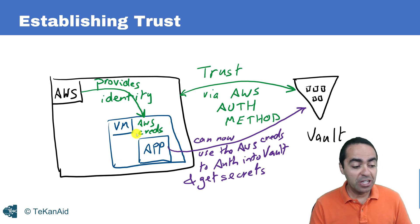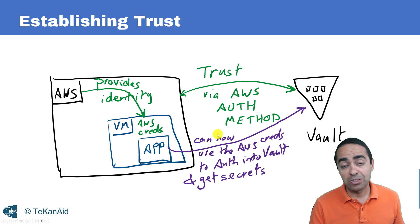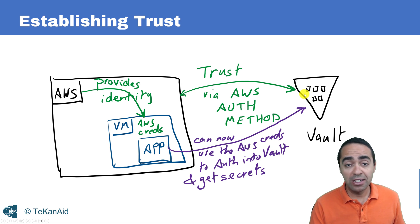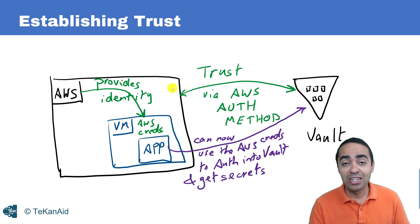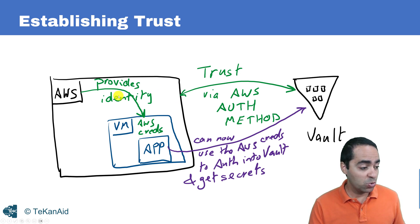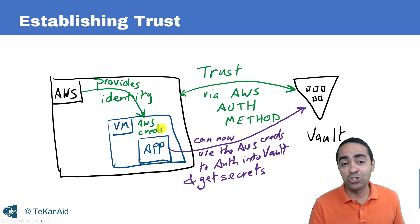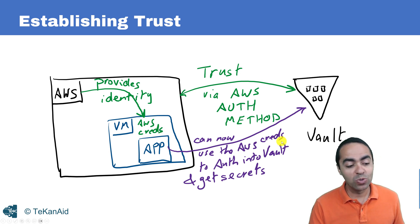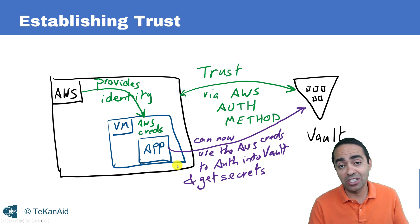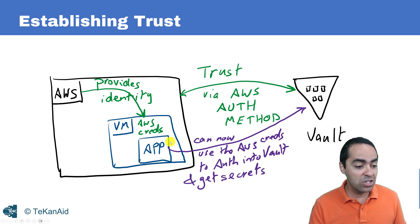The EC2 instance has credentials and an identity, and based on that identity the application can use those credentials to authenticate into Vault. Vault then verifies those credentials against the AWS API to confirm whether the machine is who it claims to be. Vault asks AWS: 'Do you know this VM? Were these credentials issued by you?' AWS responds yes, Vault authenticates the application, and the app can retrieve its secrets — with no vault token stored anywhere.